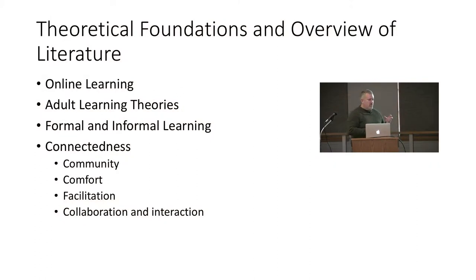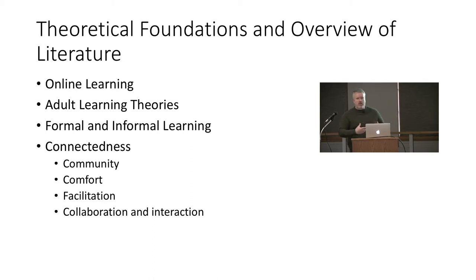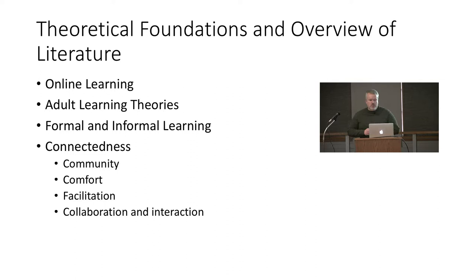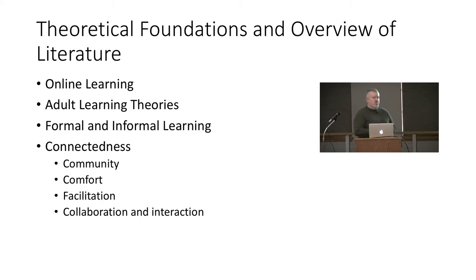The theoretical foundations underpinning this study involve looking at online learning specifically for adults — all graduate students who already have a bachelor's degree or are very close to finishing. We're looking at both formal and informal learning, since we can learn formally from reading books and taking courses, and informally through lifelong learning in various settings. When we look at connectedness, it has four primary pillars: community, comfort, facilitation, and collaboration interaction.